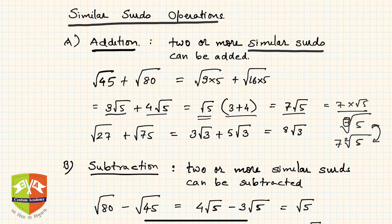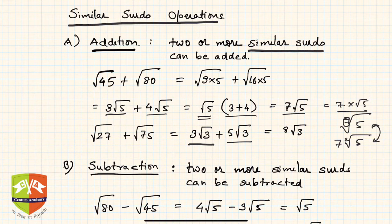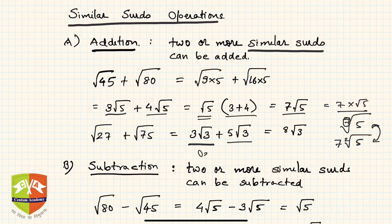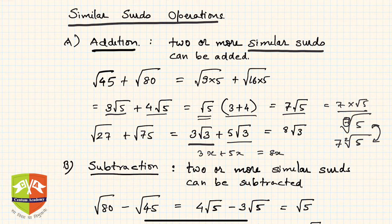Similarly, √27 + √75 = 3√3 + 5√3. They are similar because their irrational parts are the same, so we can add them just as you would add algebraic terms. If you call √3 as x, it is like adding 3x + 5x = 8x — similar to the algebraic relation we have already studied.